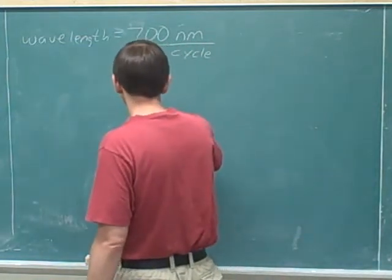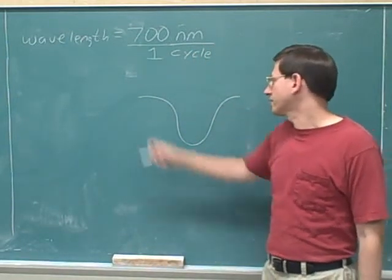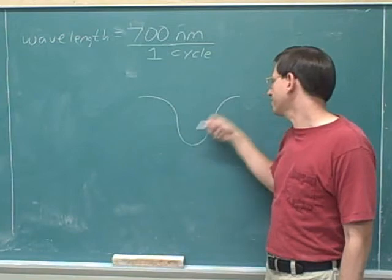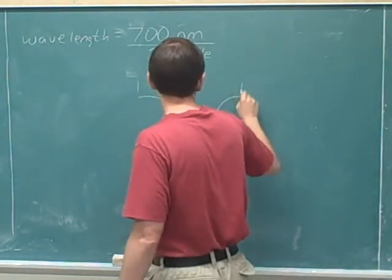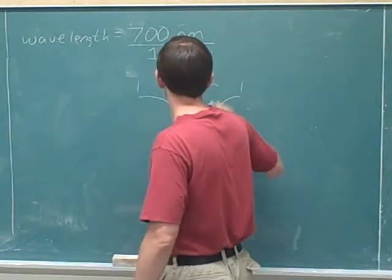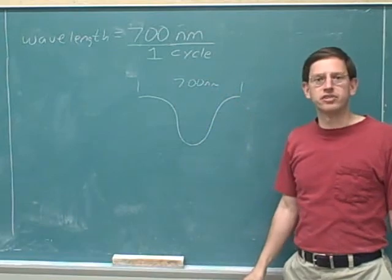So if you were going to draw the wave, this is how you can draw a complete cycle. From crest to trough and back to crest again. And we're saying that in one complete cycle, the distance from one crest to another crest is 700 nanometers.